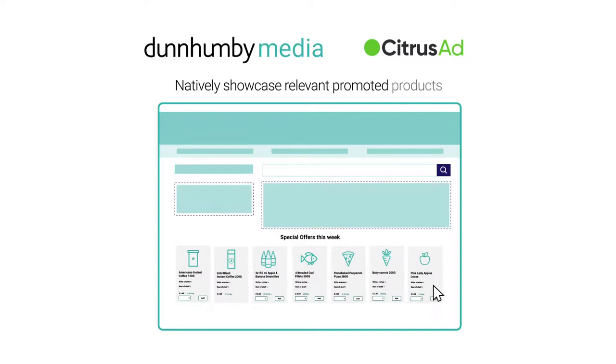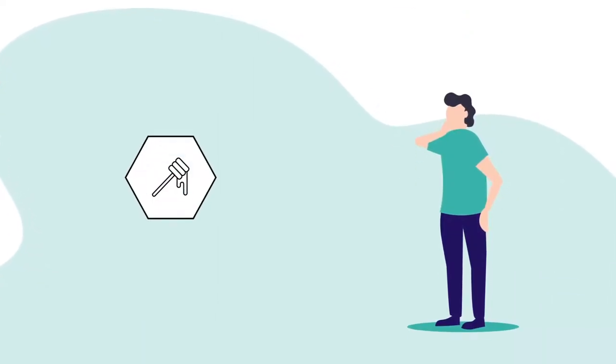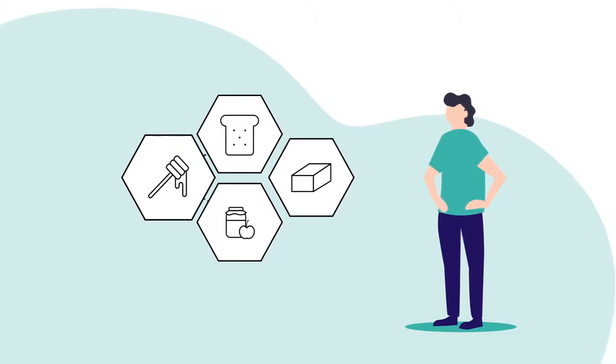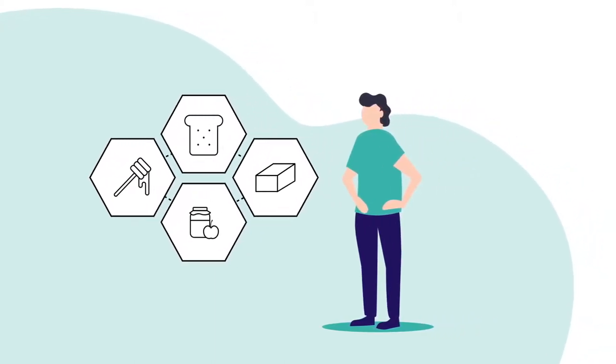It combines Dunhumby's customer data science capabilities with Citrus Ad's self-service advertising platform to give retailers the ability to select locations where brands can natively showcase relevant promoted products. By analyzing each customer's on- and offline purchase history, digital on-site sponsored products is able to score them against every product that a retailer sells.